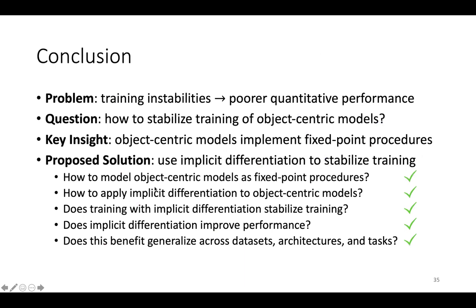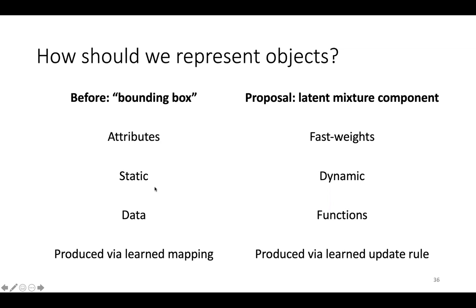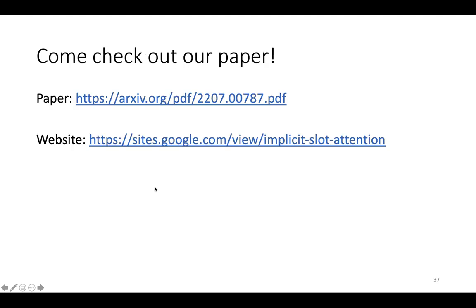In conclusion, I showed that the insight of conceptualizing object representations as stable points of a fixed-point procedure led to a novel method of training these methods based on implicit differentiation, which empirically improved optimization performance. I hope this talk inspires future work to think about object representations not as static data attributes that we produce via mappings, such as bounding boxes, but as dynamic fast weights that serve as parameters of latent mixture models that adapt via learned update rules. For more information, please see our paper.